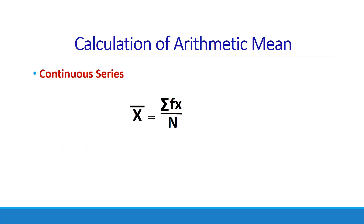Now let us see how the arithmetic mean is calculated in the case of continuous series. Here also, the same formula as in discrete series is applied: x̄ = Σfx / n. But in this case, x is the mid value of the class intervals. That is the only difference between the discrete series and the continuous series.